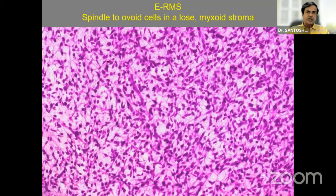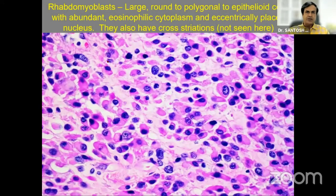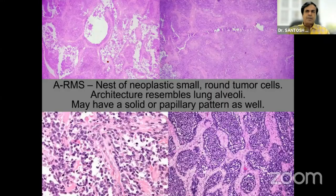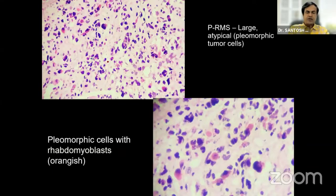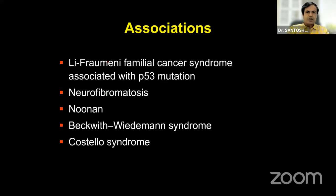Spindle to oval cells in loose myxoid stroma is the hallmark with mitotic activity. Immunohistochemistry is mandatory in any round-cell tumor and rhabdomyosarcoma has a specific IHC profile. In our series, embryonal was the most common variant, followed by alveolar. Pleomorphic is rare and botryoid is the rarest form. We should not forget the associations of rhabdomyosarcoma — Li-Fraumeni familial cancer syndrome associated with P53 mutation, neurofibromatosis type 1, Noonan syndrome, Beckwith-Wiedemann syndrome, and Costello syndrome are documented associations. Genetics is now coming into rhabdomyosarcoma research heavily to identify chemo-resistant and refractory variants.